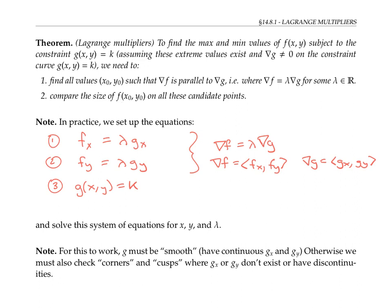For this method to work, the constraint function G must be smooth in the sense of having continuous first partials. Otherwise, we must also check any cusps or corners on our constraint curve where G_x or G_y don't exist or have discontinuities.